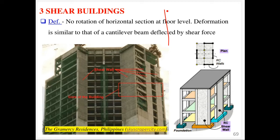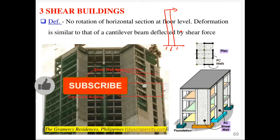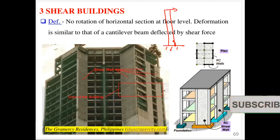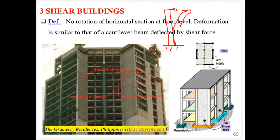Consider that we have lumped our columns into a single column representation, using effective or combined stiffness. If this deflects as a result of a horizontally applied lateral force, the deflection will be like that of a beam subjected to shear force only. The lateral force acts as a shear force, so there will be no rotation at the support.